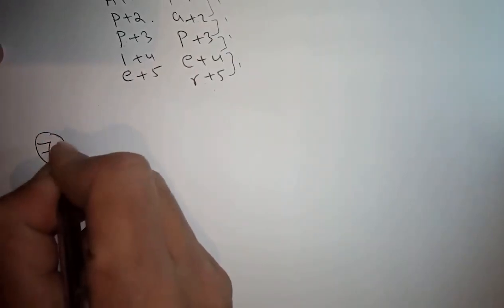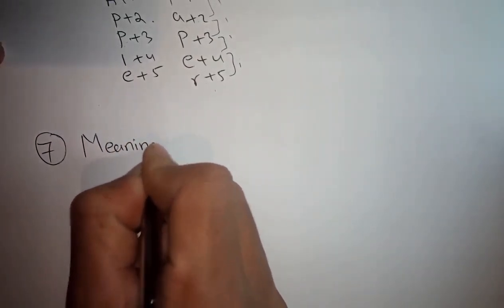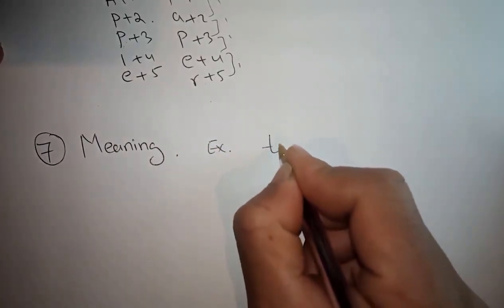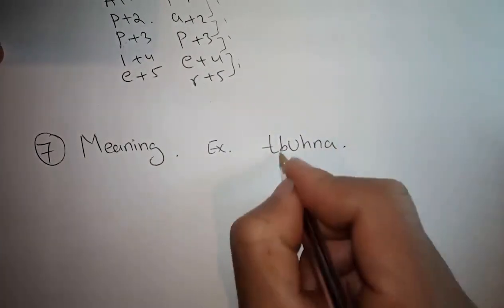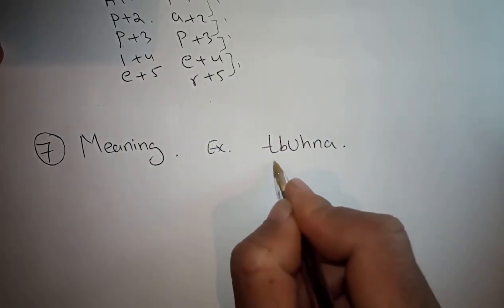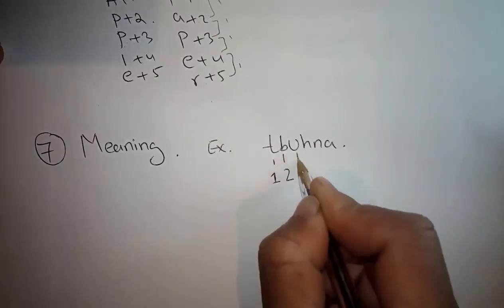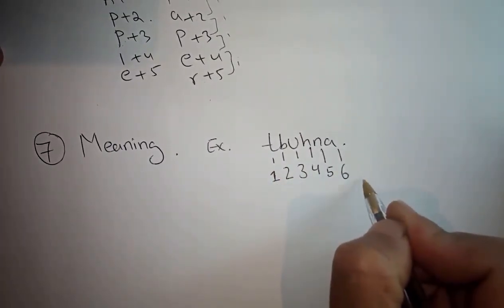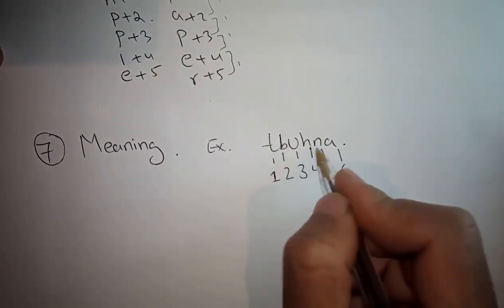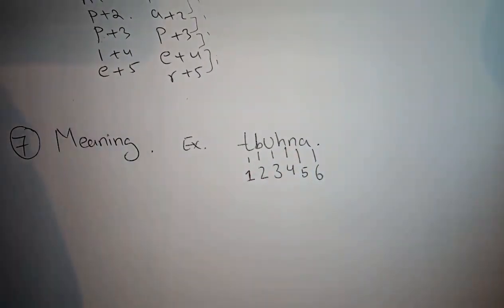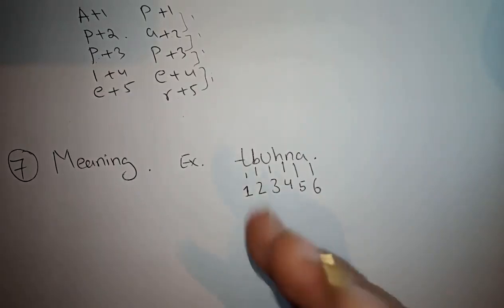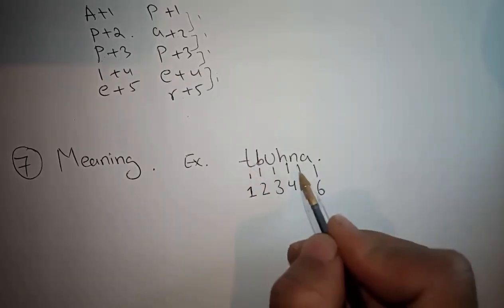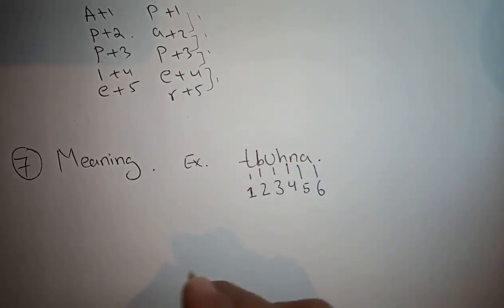The seventh type is meaning. In this case, for example, if TBUHNAS is coded as one, two, three, four, five, six, arrange the numbers in such a way that the given letters give meaning. You'll be given four options. You don't have time to shuffle all the words, so if you can't get the meaning, you can match with the options.